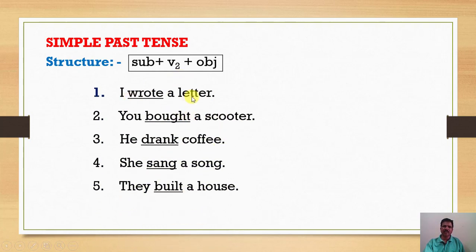Observe the examples: I wrote a letter. You bought a scooter. He drank coffee. She sang a song. They built a house. If you observe the given five sentences, in the first sentence wrote is V2. In the second sentence bought is the second form of the verb. In the third sentence drank is the second form. In the fourth sentence sang is the second form. In the fifth sentence built is the second form. If you find the second form of the verb in a sentence, the sentence should be in simple past tense.